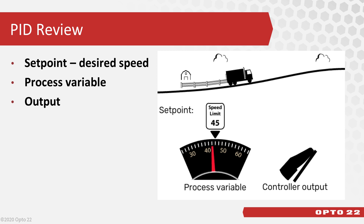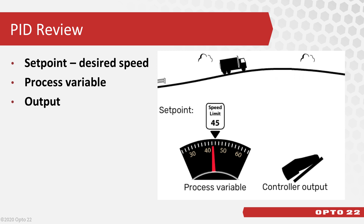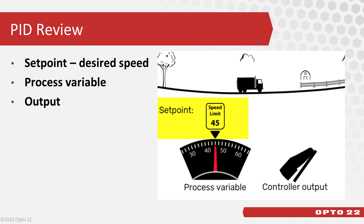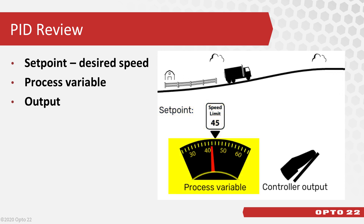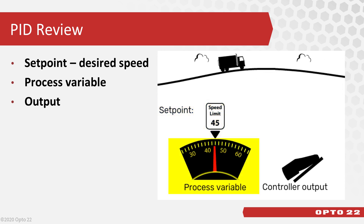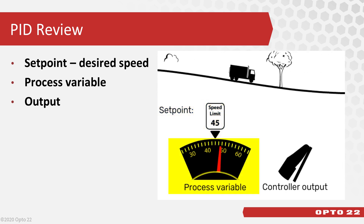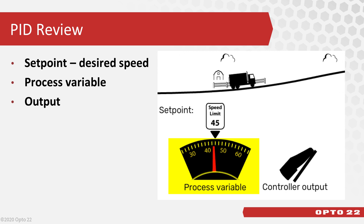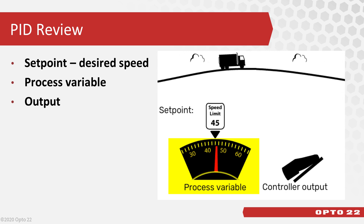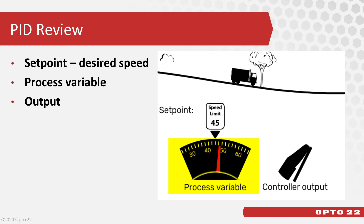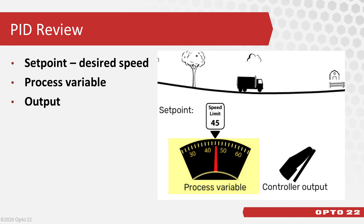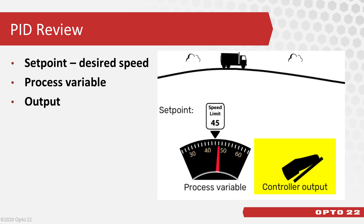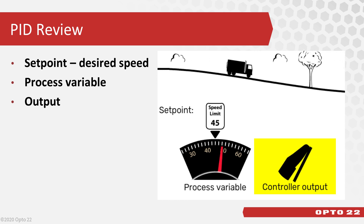Think of a PID like the cruise control in your car. Your desired speed is like the setpoint. Your current speed — the input or process variable — is affected by changes on the road, such as driving up and down hills or headwinds. Your cruise control does the calculations to increase the speed, the output, so that your car can maintain the desired speed.